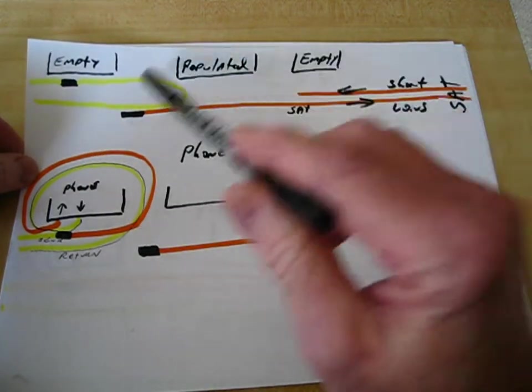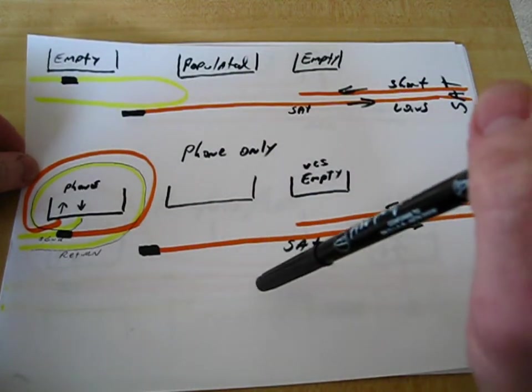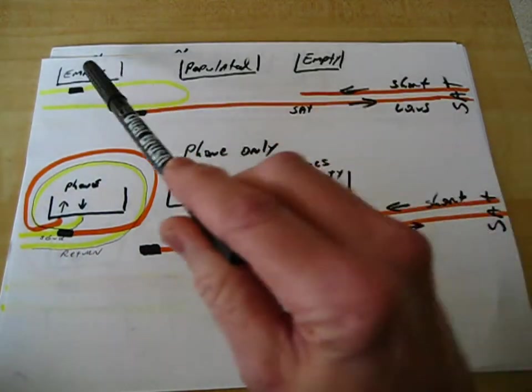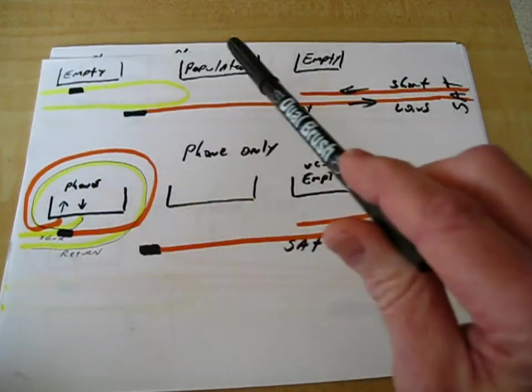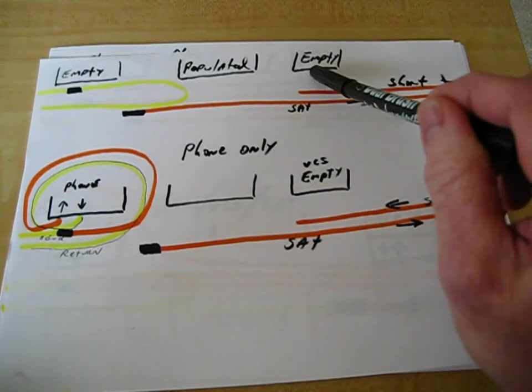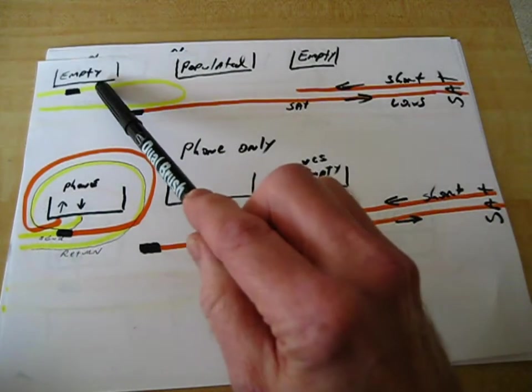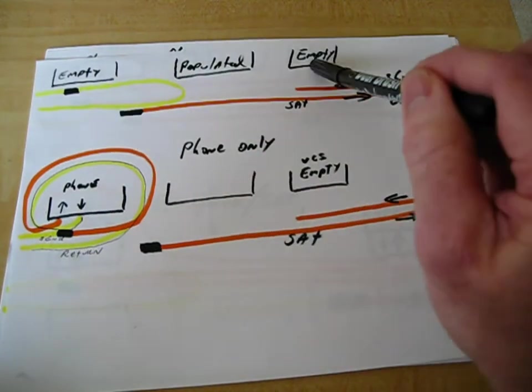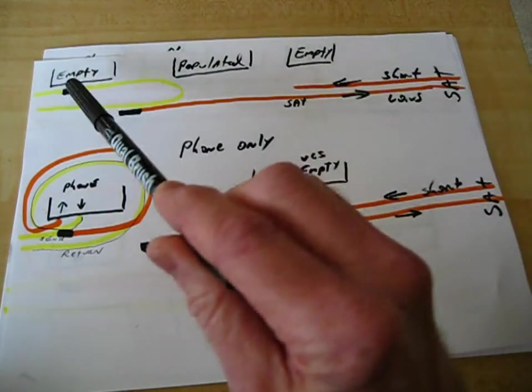For instance, my '05—I take the cover off—this space here is empty, this space here is populated with some electronics, and this space here is empty. This is where your phone unit goes. This is where your voice control unit goes.